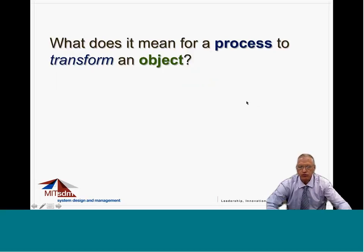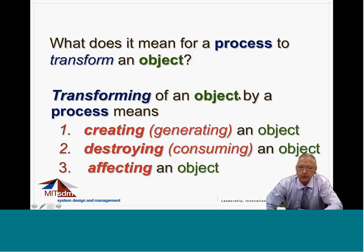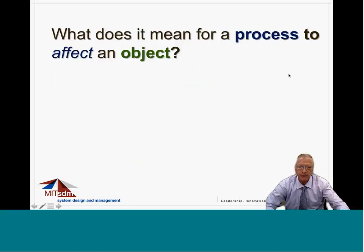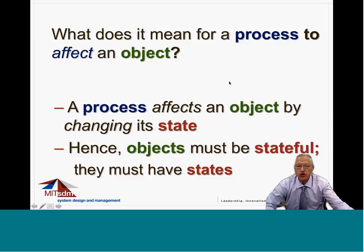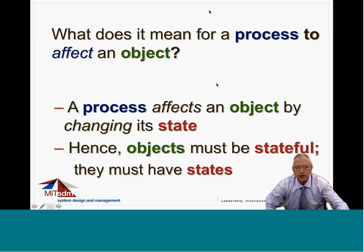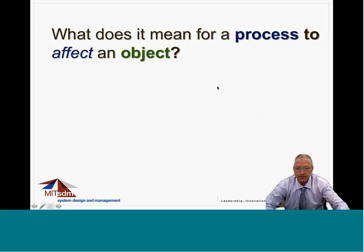What do processes do to objects? They transform. Transforming an object by a process means one of three possible things: the process can create an object, the process can destroy or consume an object, or the process can affect an object — changing its state. This introduces a third term, state. Objects must be stateful; they must have states. We are talking about stateful objects and processes that transform them.